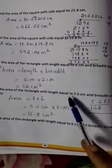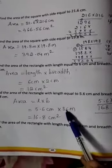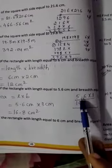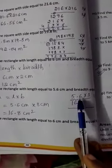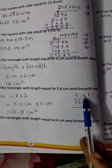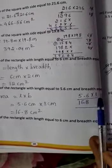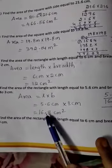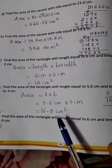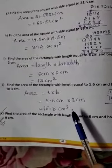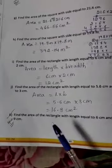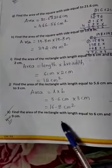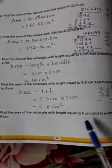Length is 5.6 and breadth is 3 cm. So we need to multiply 5.6 into 3. To make it easy, remove the point and do 56 into 3: 3 sixes are 18, 3 fives are 15, plus 1 is 16 — giving 168. So the answer is 16.8 cm square.